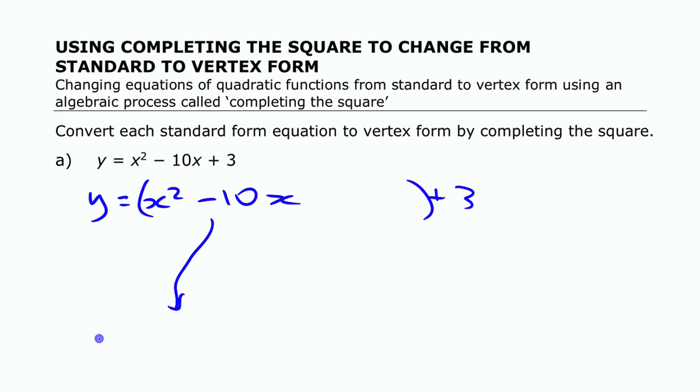What this is going to mean eventually is I'll be able to turn this into (x minus 5)² because if I multiplied out (x minus 5)², I'd have x² minus 10x, but I need it plus 25 there.